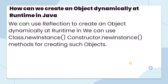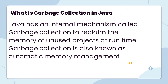How can we create an object dynamically at runtime? We can use Reflection to create an object dynamically at runtime, using Class.newInstance or Constructor.newInstance for creating such objects.